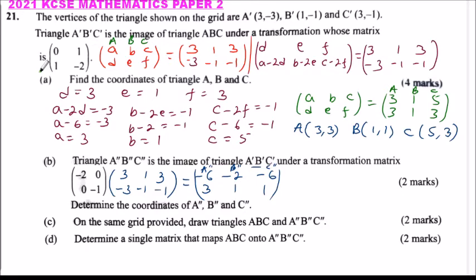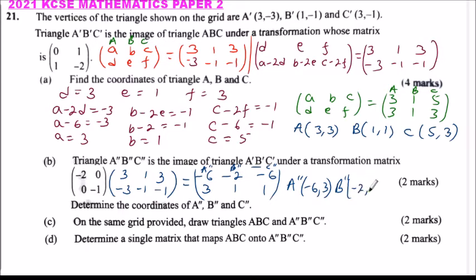So the result gives us: A'' has coordinates (-6, -6), B'' has coordinates (-2, 1), and C'' has coordinates (-6, 1). Those are the coordinates of triangle A''B''C'', and we have answered part B.